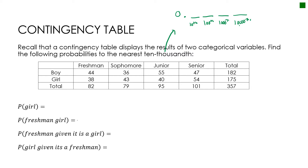The probability of a girl means out of the total of 357, how many are girls? Looking at the total column, there are 175 girls out of 357. So 175 divided by 357 — get your calculator out to divide — gives us 0.4902. Make sure you know how to round.